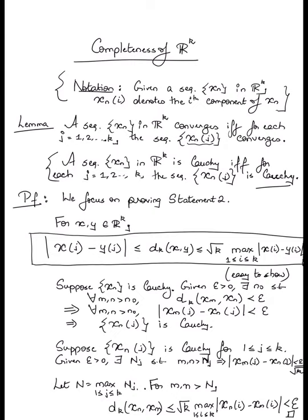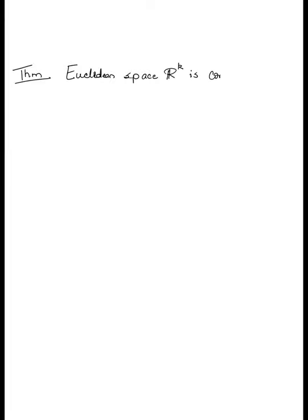It all really boils down to the use of that one inequality. This is essentially all we have used to show that Cauchiness of the sequence in the k-dimensional space is equivalent to Cauchiness of every component. The same style of argument would also let you prove Statement 1, which is that convergence of a sequence in R^k is equivalent to the convergence of each component sequence in R. This was a preliminary lemma needed to address the completeness of R^k, which we will now do in the next theorem.